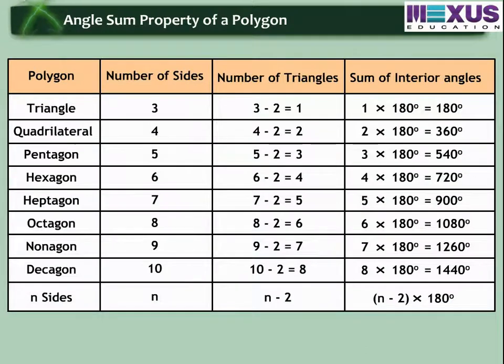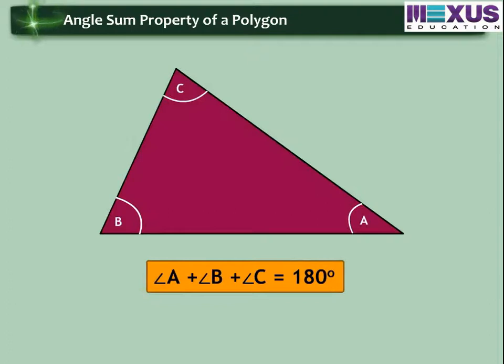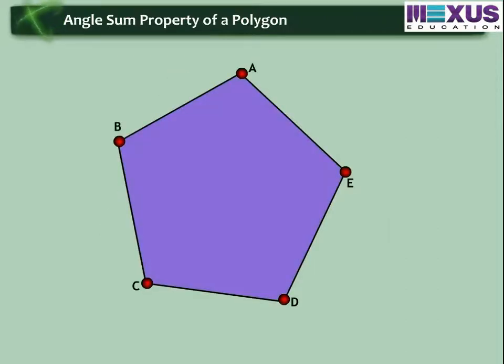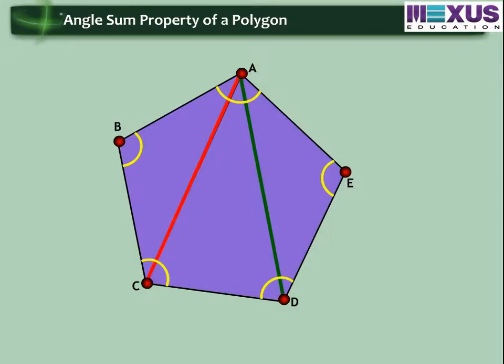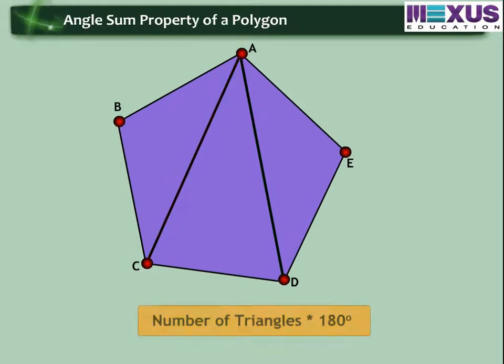Let us now learn angle sum property of a polygon. You have already learned that the sum of the measure of the three angles of a triangle is 180 degrees. To begin with, a polygon with four or more sides, draw all the diagonals possible from one vertex of the polygon. Then, you will see it is divided into several non-overlapping triangles. Now, interior angle sum of this polygon can be found by multiplying the number of triangles by 180 degrees.